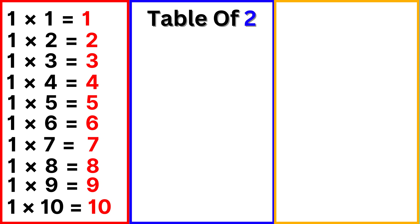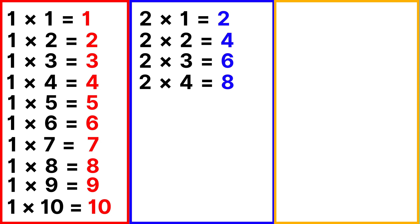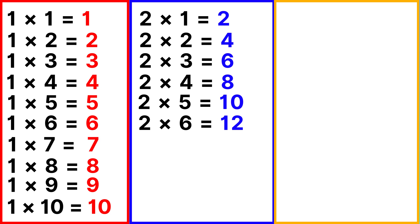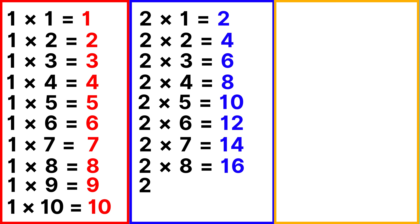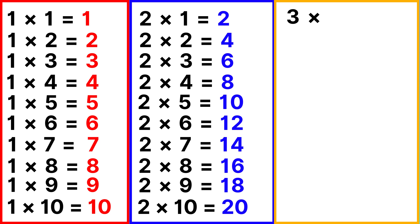Table of 2: 2 ones are 2, 2 twos are 4, 2 threes are 6, 2 fours are 8, 2 fives are 10, 2 sixes are 12, 2 sevens are 14, 2 eights are 16, 2 nines are 18, 2 tens are 20.